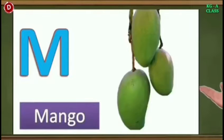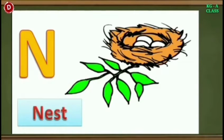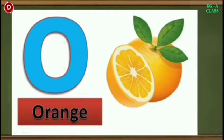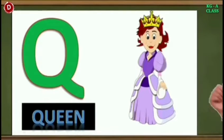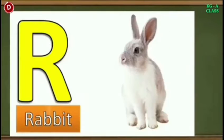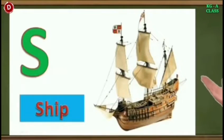Now comes M. M for mango. Summer is the season of mango. Now comes N. N for nest. The bird lives in a nest. Children, this is O. O for orange. Now comes P. P for parrot. The next letter is Q. Q for queen. Now comes R. R for rabbit. This is S. S for ship.